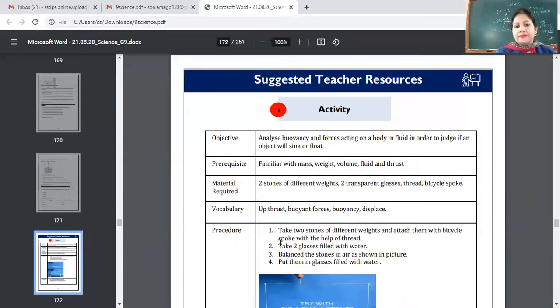Very simple activity this is. Analyze buoyancy and forces acting on a body in fluid in order to judge if an object will sink or float. So what material you require, that is easily available at home. Two stones of different weights, two transparent glasses, thread, bicycle spoke. If you are not having bicycle spoke, then you can take, you can say stick also, wooden stick also. Okay. Upthrust, buoyant force, displacement.